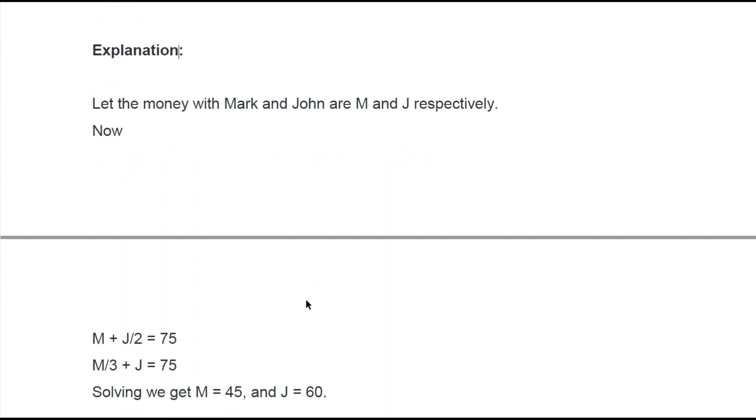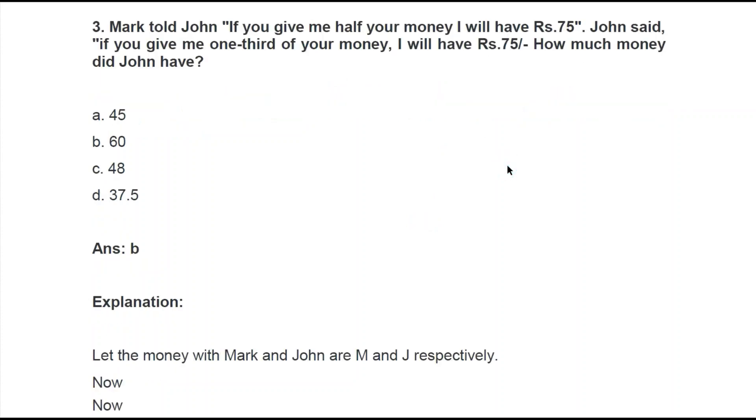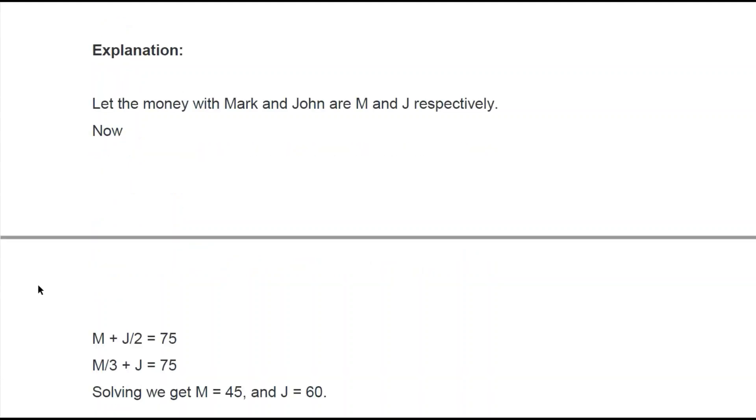Let the money with Mark and John are M and J respectively. Alright. Now M plus J by 2 equals to 75. As Mark had told John that if you give me half of your money, thus it becomes J by 2, then Mark is going to have 75. So it is equals to 75.